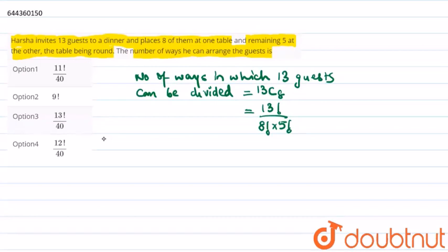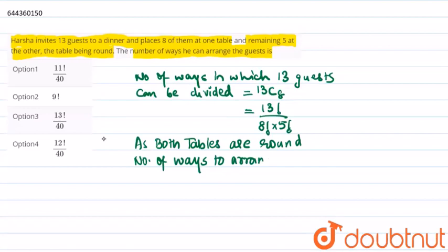Now, as both tables are round, the number of ways to arrange 8 guests